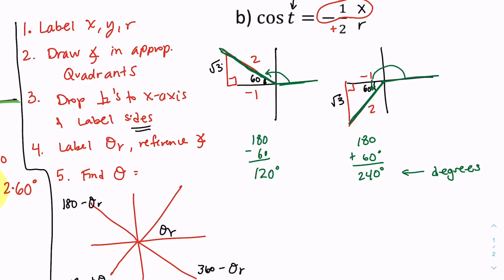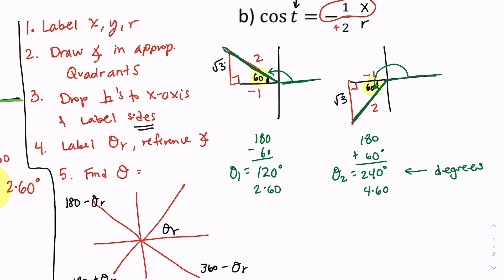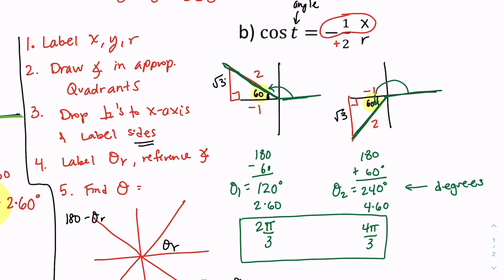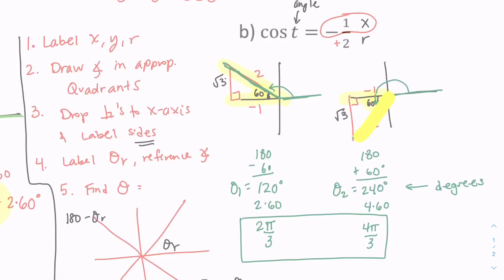Converting to radians: use the reference angle as a guide. 120 degrees is 2 times 60, so that's 2π/3. 240 degrees is 4 times 60, so that's 4π/3. Those are our two answers. If you take cosine of 2π/3 or 4π/3, both give negative 1/2, because x is negative 1 and r is positive 2 in both cases.